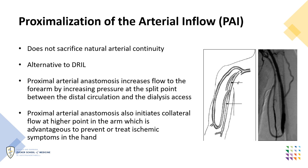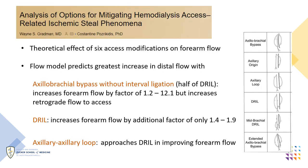While DRIL might be the most effective procedure, there is reluctance to ligate normal arteries supplying the distal arm, which led to the development of proximalization of arterial inflow. This technique does not sacrifice natural arterial continuity. Proximal arterial anastomosis increases flow to the forearm by increasing pressure at the split point between the distal circulation and the dialysis access, and initiates collateral flow at a higher point in the arm. The study by Gradman evaluated six access modifications and showed that proximalization approached DRIL in improving forearm flow and appeared to be equally effective.